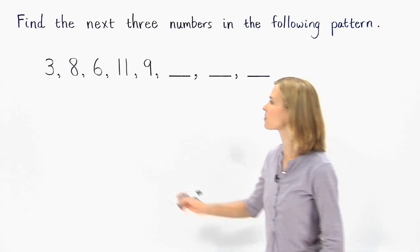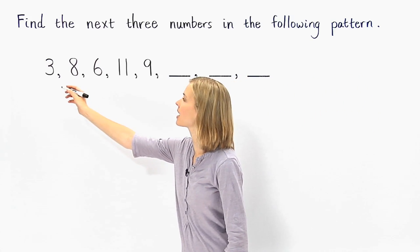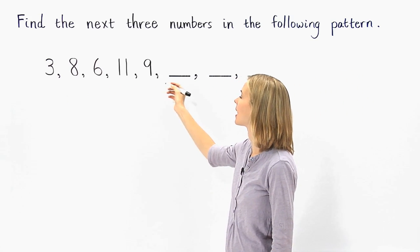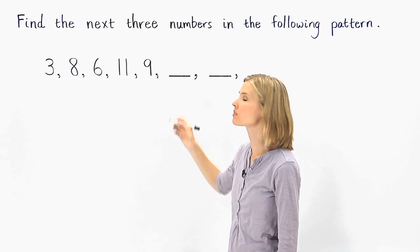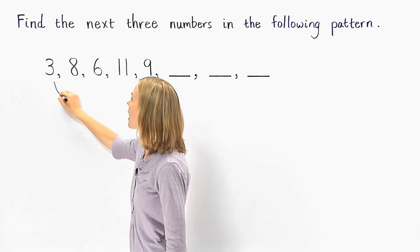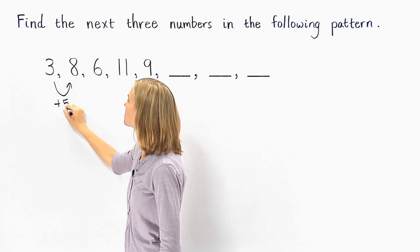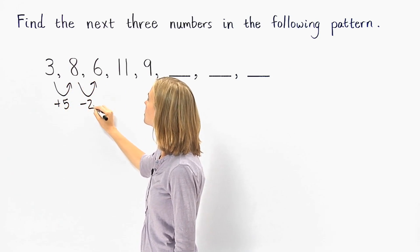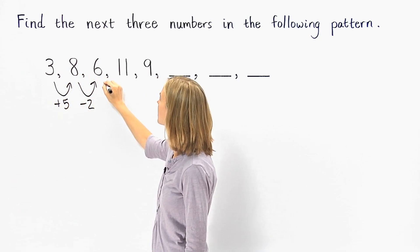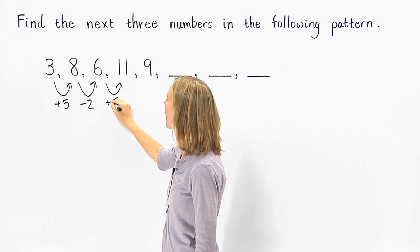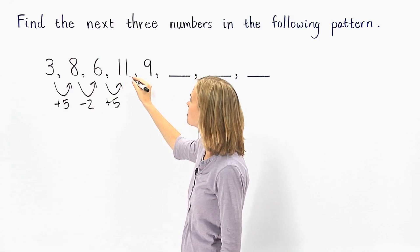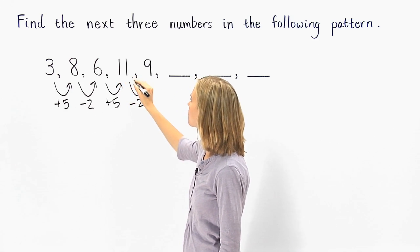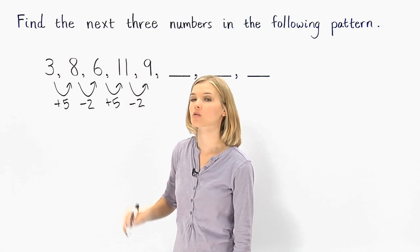In this pattern, 3, 8, 6, 11, 9, and so on. Notice that we add 5 to get from 3 to 8. Then we subtract 2 to get from 8 to 6. Then we add 5 to get from 6 to 11. Then we subtract 2 to get from 11 to 9.